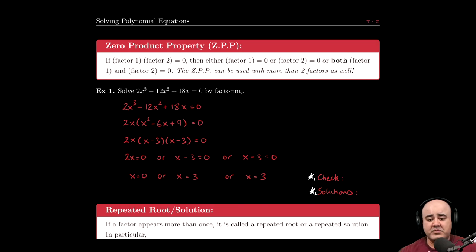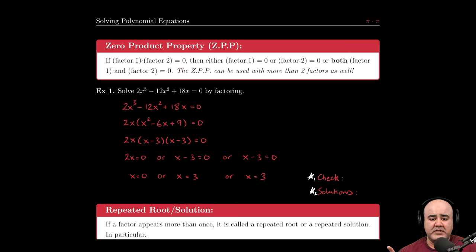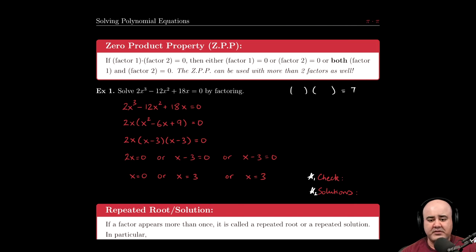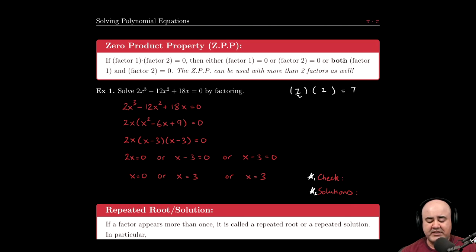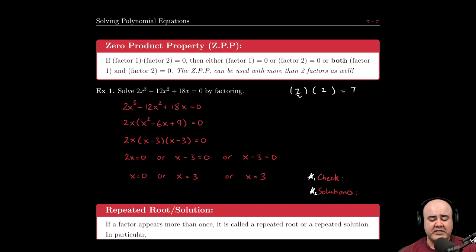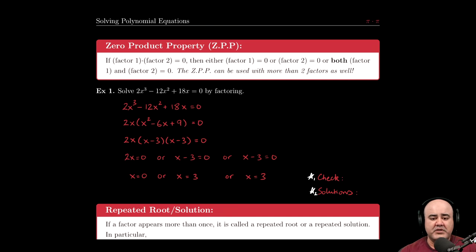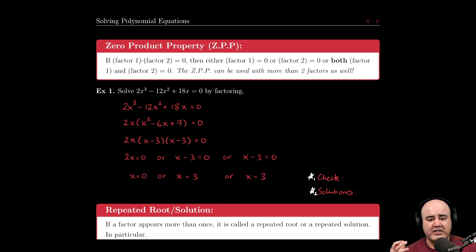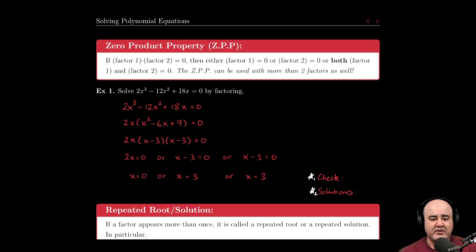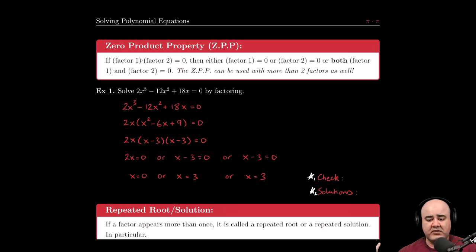This is not true of any other number. If you had, for instance, some quantity times another quantity equals seven, one of these doesn't have to be seven. This could be seven halves and two - if you multiply seven halves by two you get seven. You can do this with any other number as well. Zero is the only number that has a property that forces one of the factors to be zero. Perhaps more if you have 17 terms - maybe three of them are zero but not the others, but one of them must be zero.